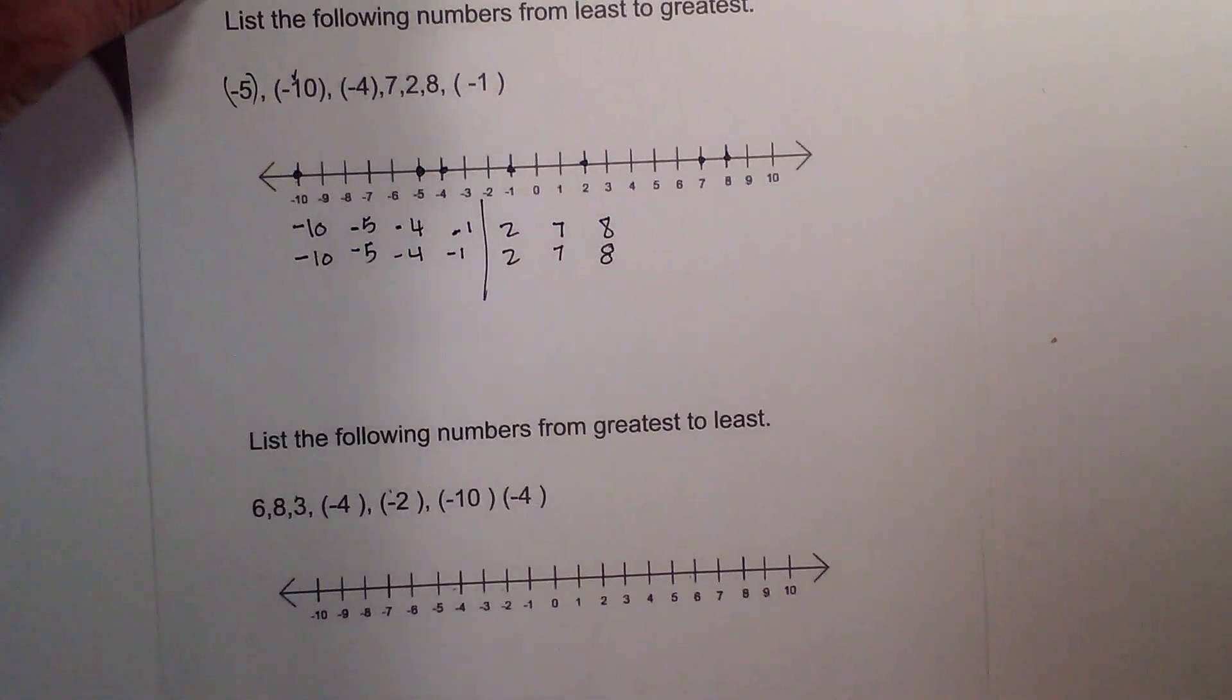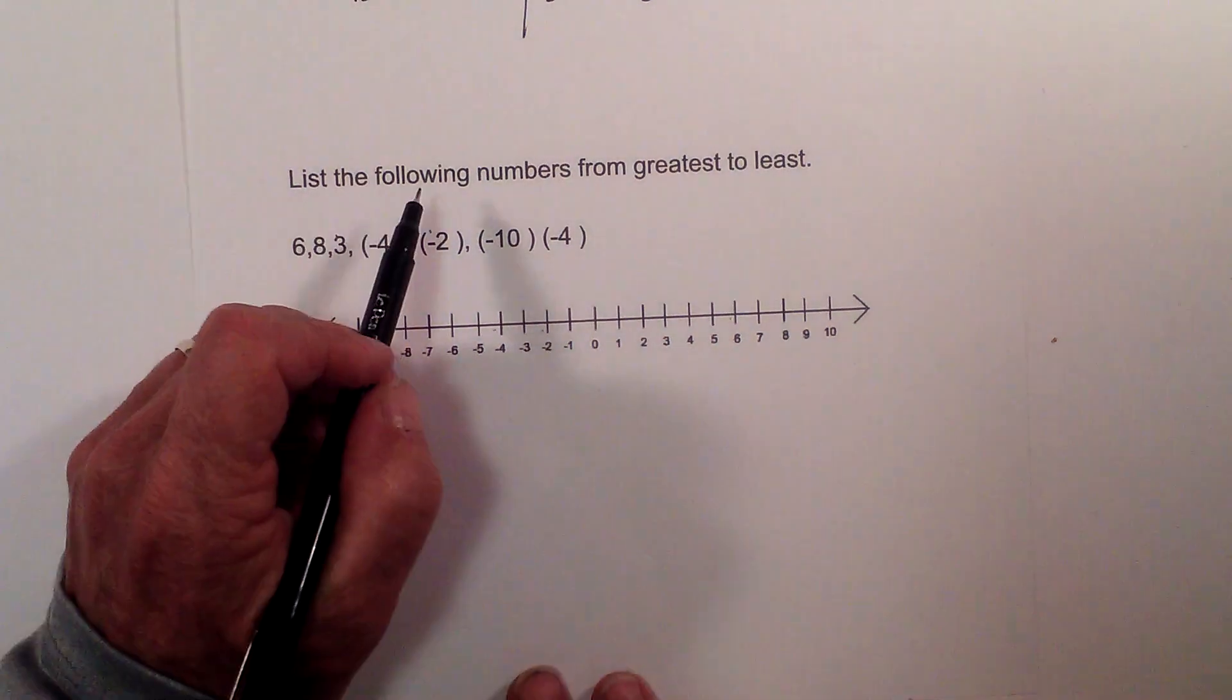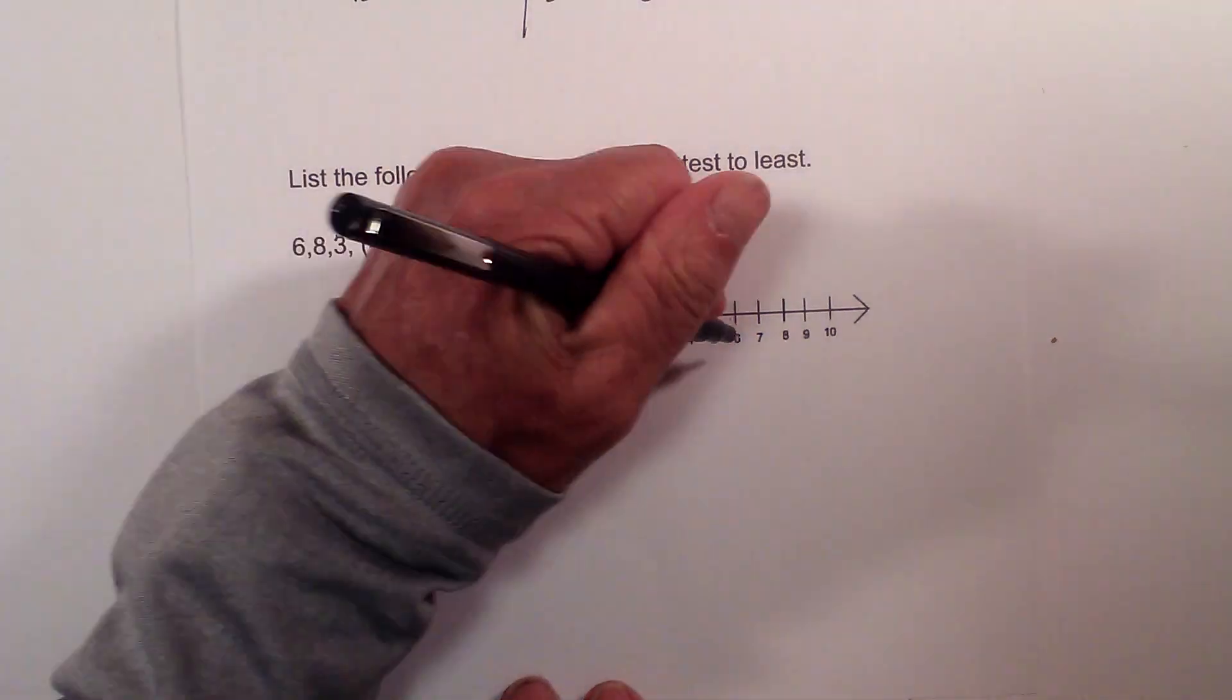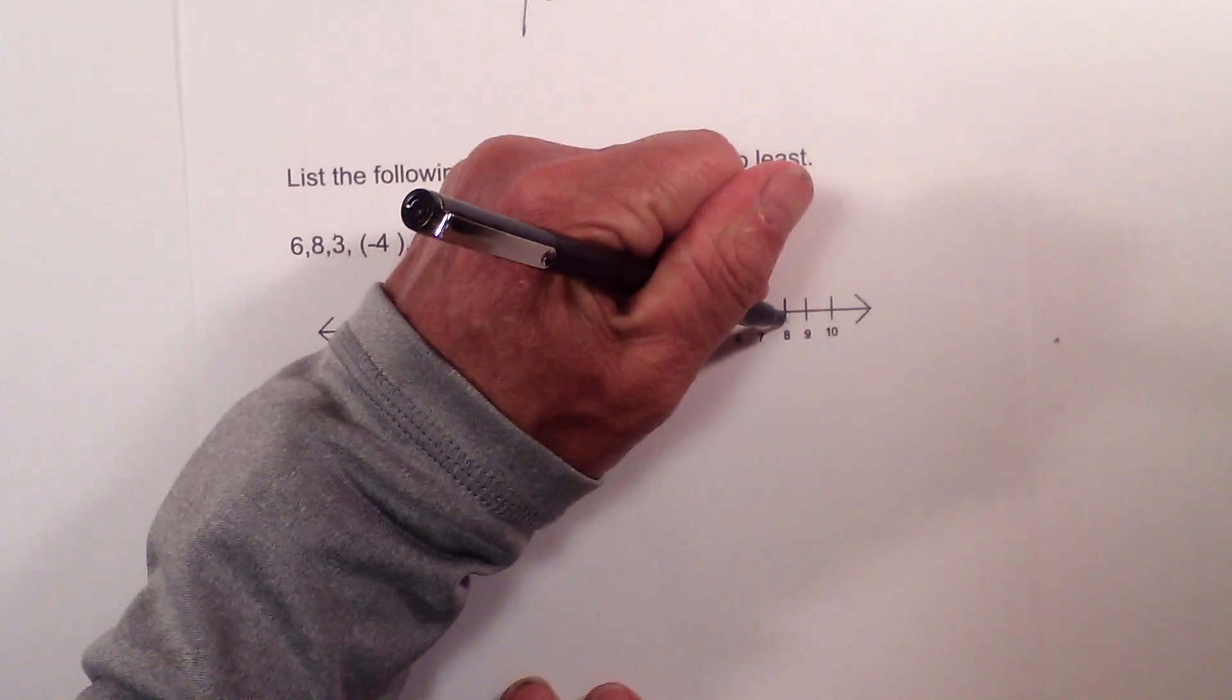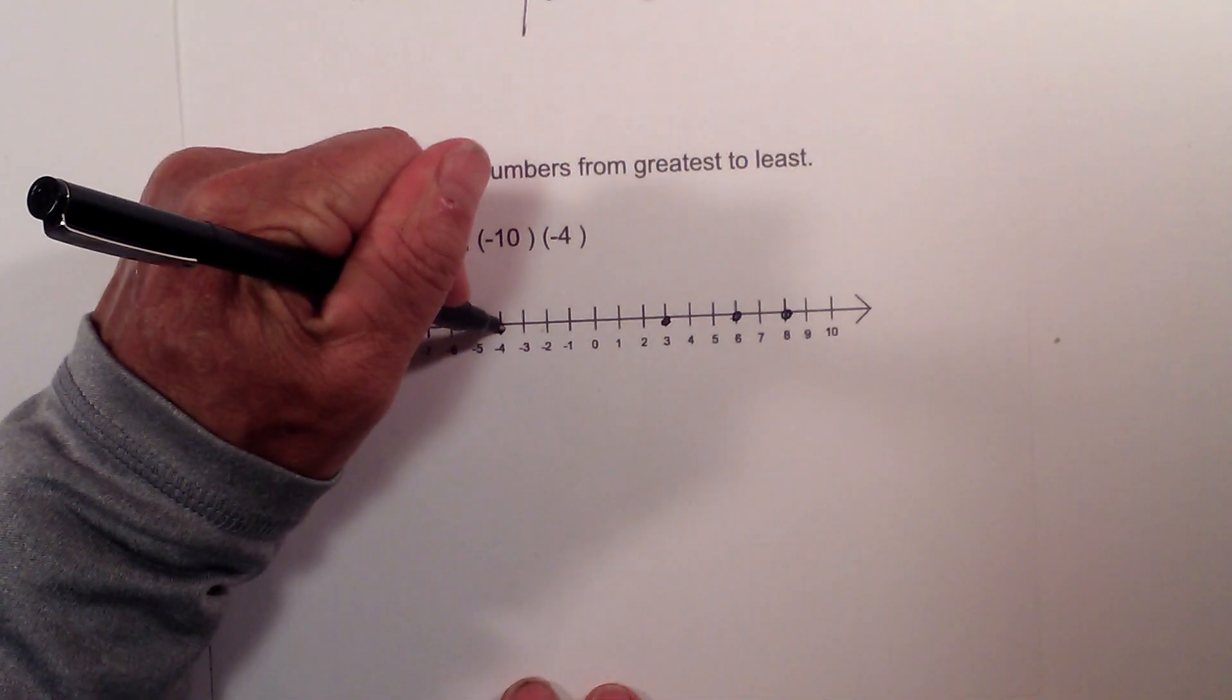Let's look at one other example. And this time we're going opposite. List the following from greatest to least. So I'm going to put them on the number line. We have 6, then 8, then 3, then a negative 4.